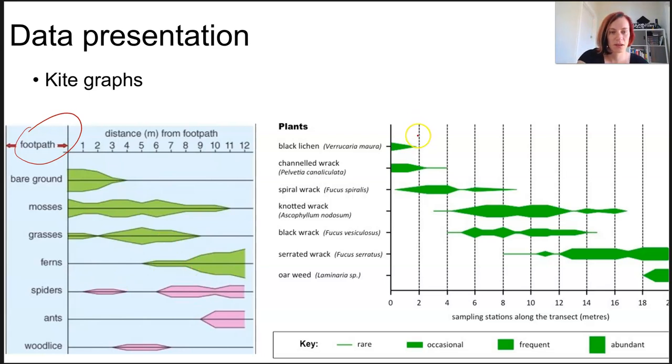Each kite shape is showing abundance and distribution. The distribution will be along this line and the abundance is shown by how wide that kite shape is.